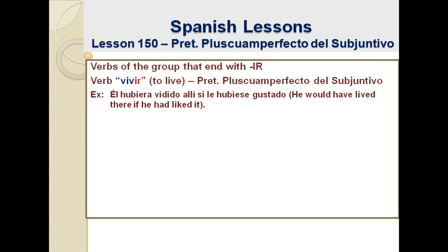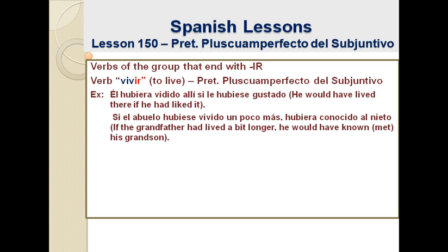We can also invert the order. We can say: 'If he had liked it, he would have lived there.' Si le hubiese gustado, él hubiera vivido allí. The order doesn't matter, same as in English as in Spanish. Here we can see another example: 'Si el abuelo hubiese vivido un poco más, hubiera conocido al nieto.' If the grandfather had lived a bit longer, he would have known — or would have met — his grandson.